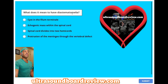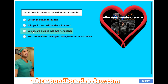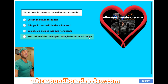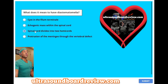What does it mean to have diastematomyelia? A, cystine filum terminale. B, echogenic mass within the spinal cord. C, spinal cord divides into two hemicords. Or D, protrusion of the meninges through the vertebral defect? The answer is C, spinal cord divides into two hemicords.